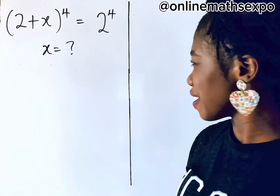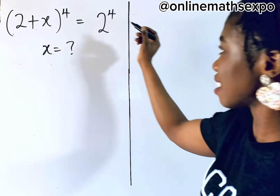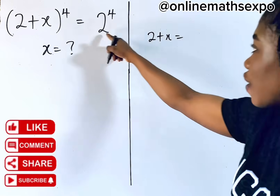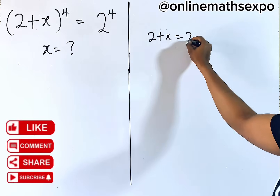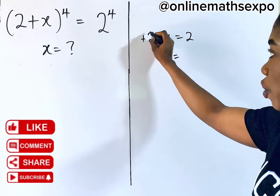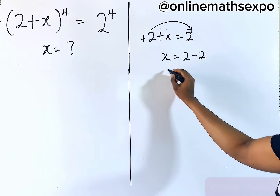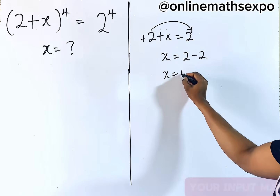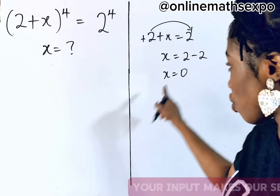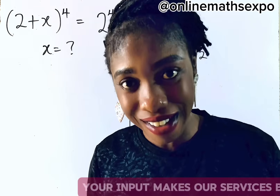By inspection, you would just say that this is the same. Since the powers are the same, it gives you 2 plus x is equal to 2. So x will give you, remember this is positive, 2 minus 2. And when you subtract this, x gives you 0. Just know that this is just 1 out of the solutions for x.